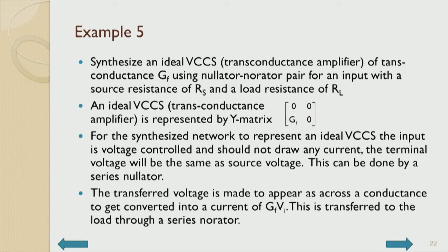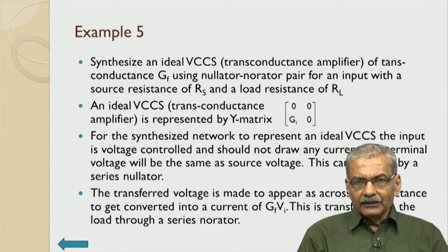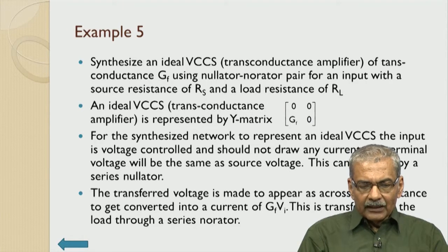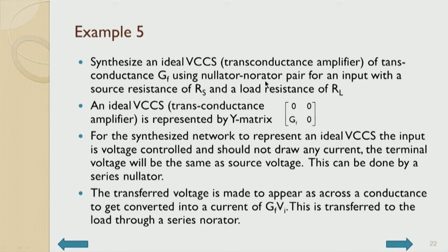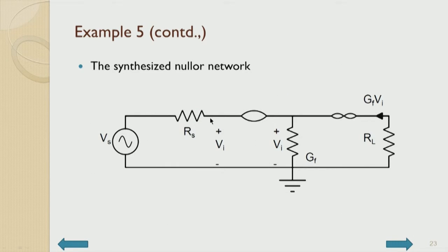We have now designed ideal voltage amplifiers and current amplifiers — two of the basic four amplifiers. The other two are the trans-conductance amplifier and trans-resistance amplifier. Example five: synthesize an ideal voltage-controlled current source with trans-conductance equal to GF. The ideal Y matrix: YI = 0, YR = 0, Y-naught = 0, YF = GF.